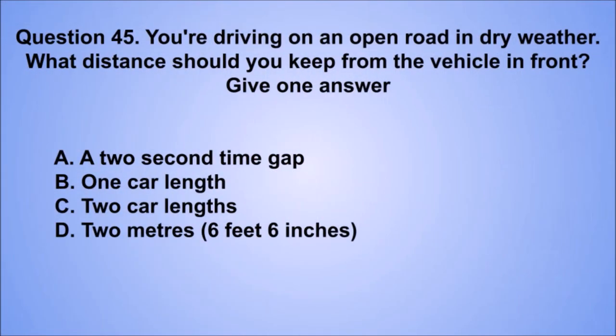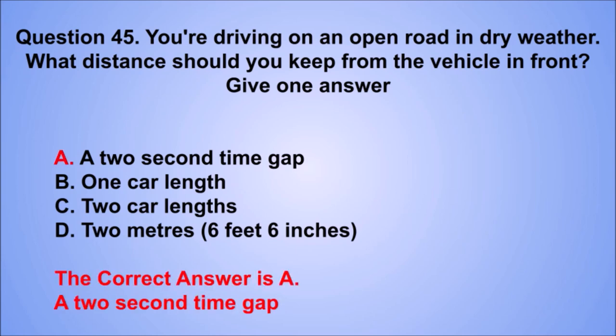Question 45. You're driving on an open road in dry weather. What distance should you keep from the vehicle in front? Give one answer. A: A two-second time gap. B: One car length. C: Two car lengths. D: Two meters, six feet, six inches. The correct answer is A: A two-second time gap.